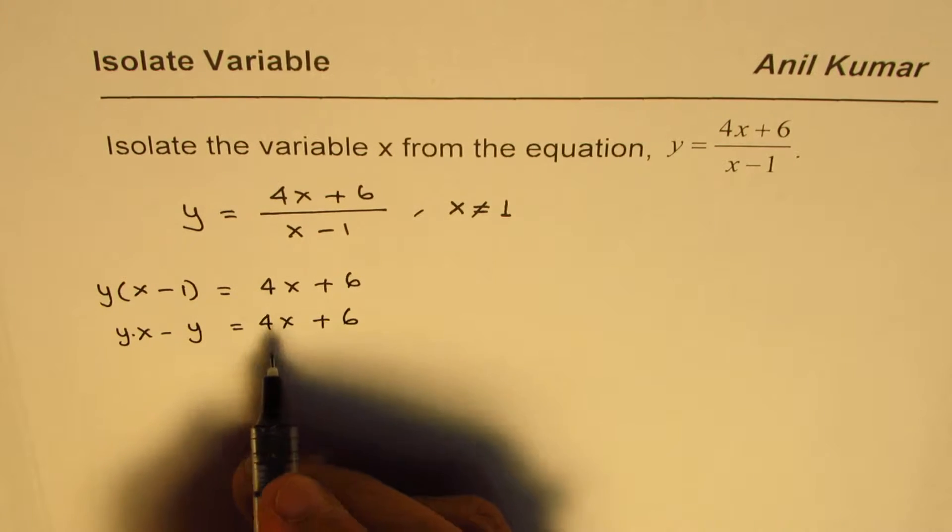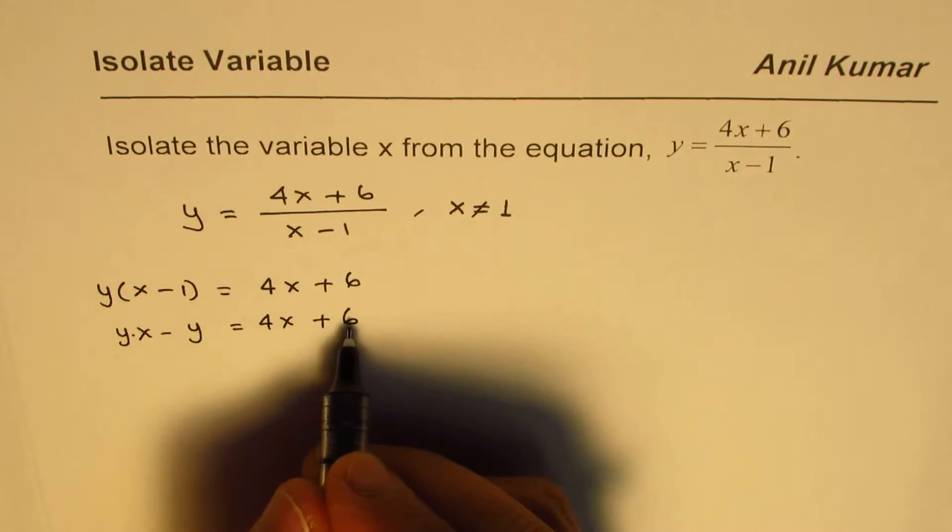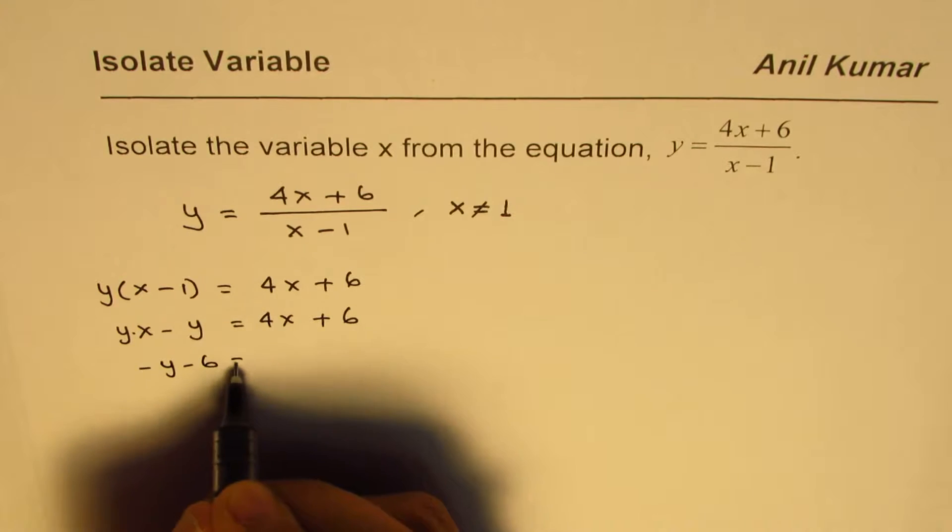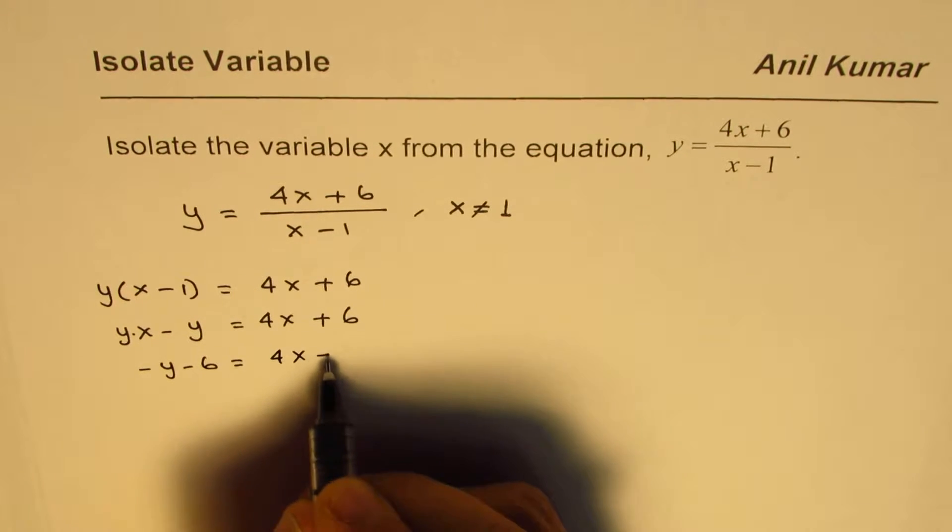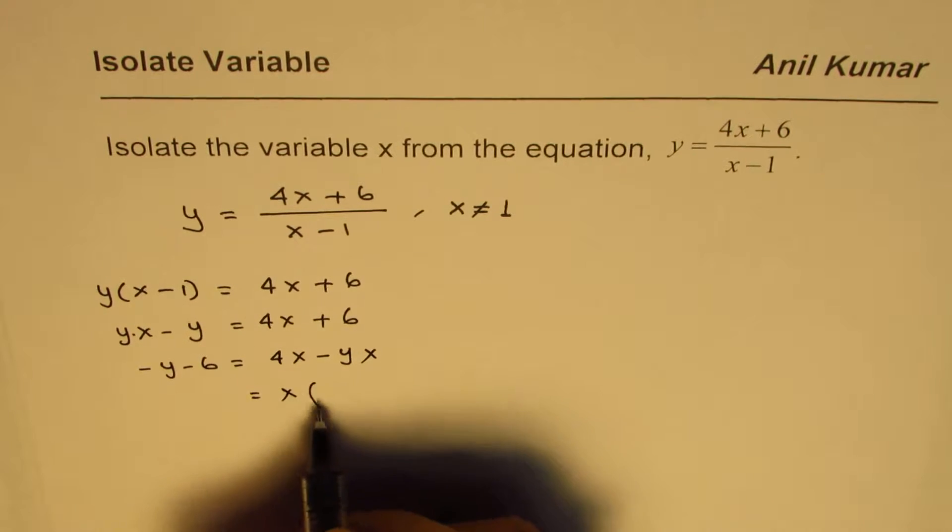Bring x's together. Let's bring this on the right side. We will have minus y minus 6 equals 4x minus yx. On the right side, we can factor x.